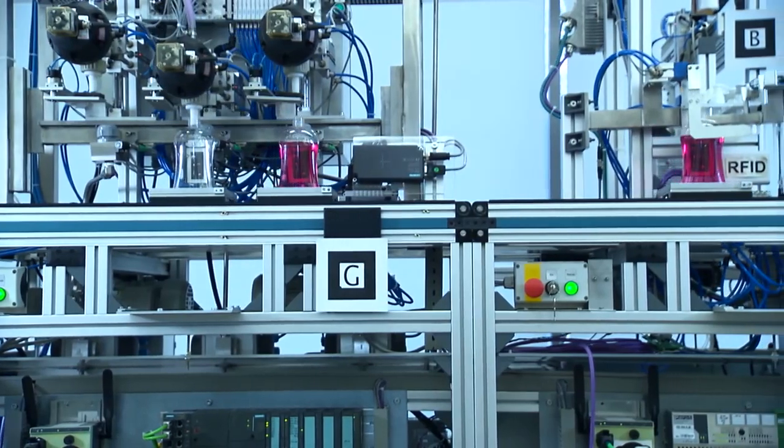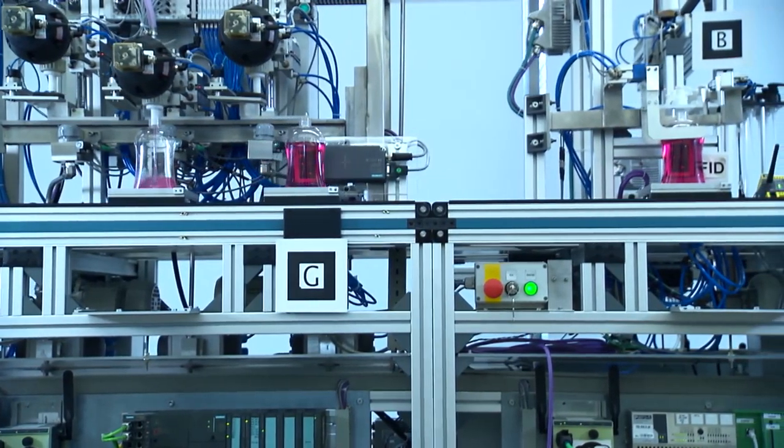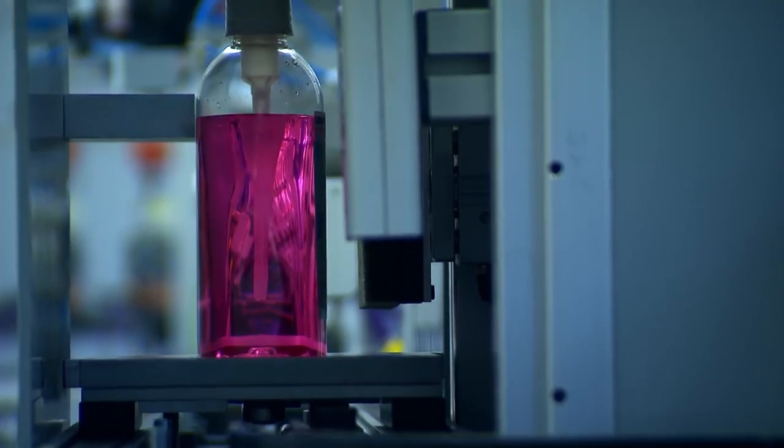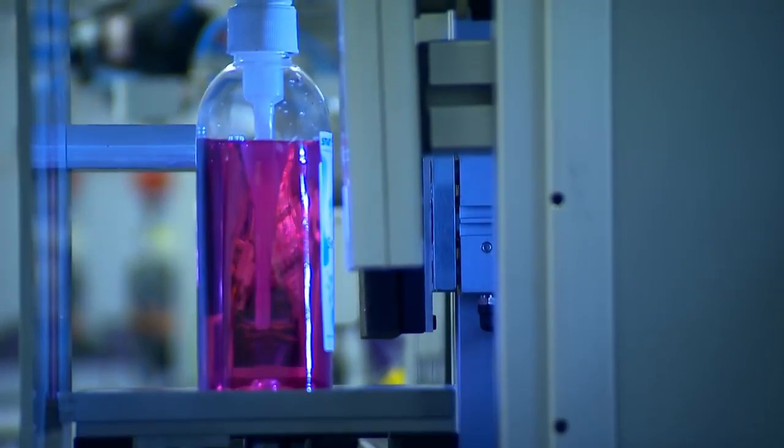At each station, the bottle communicates directly with the machine, telling it how it has to be processed. At the end, a computer checks whether the bottle has actually been produced as desired.